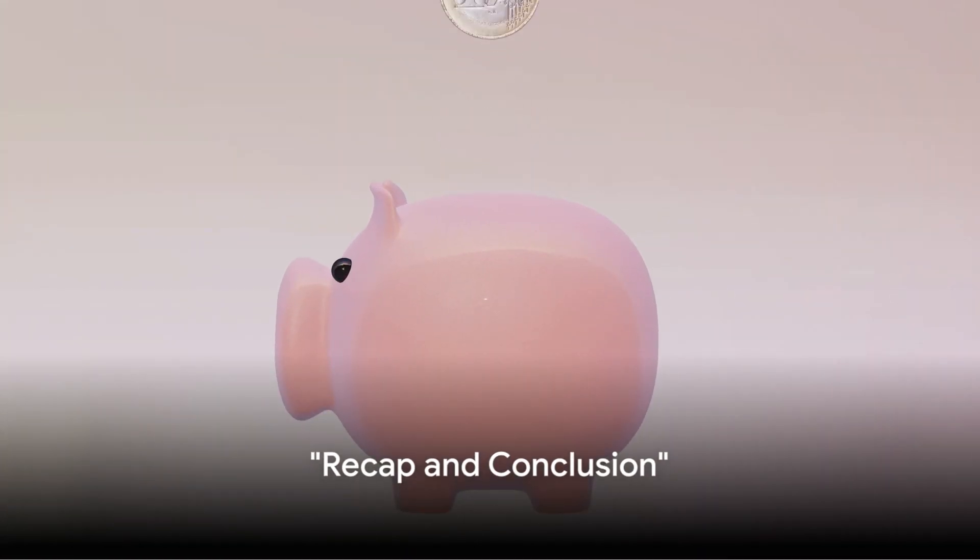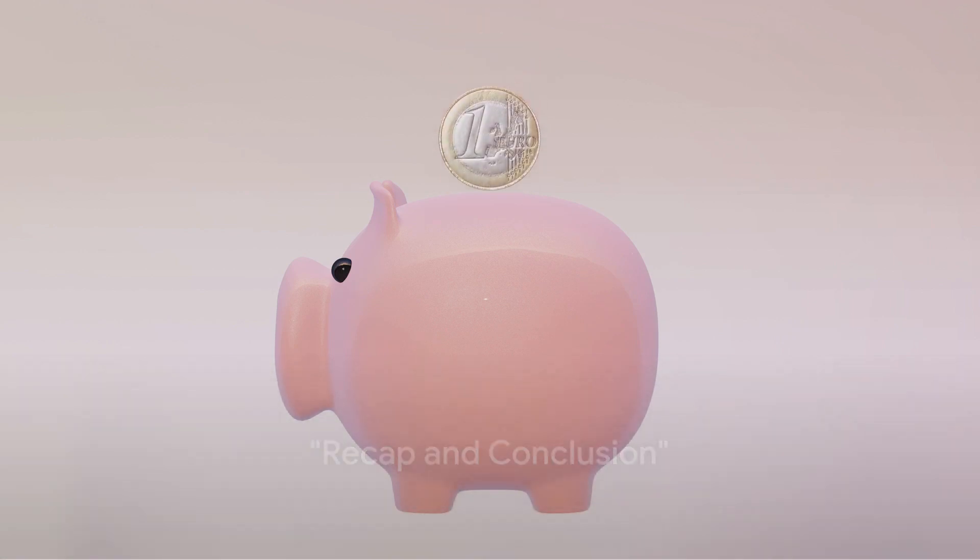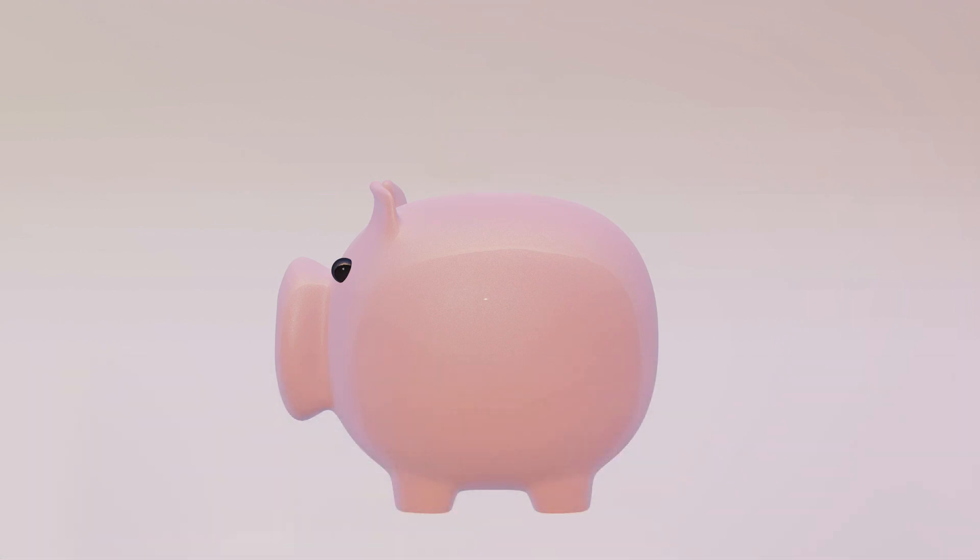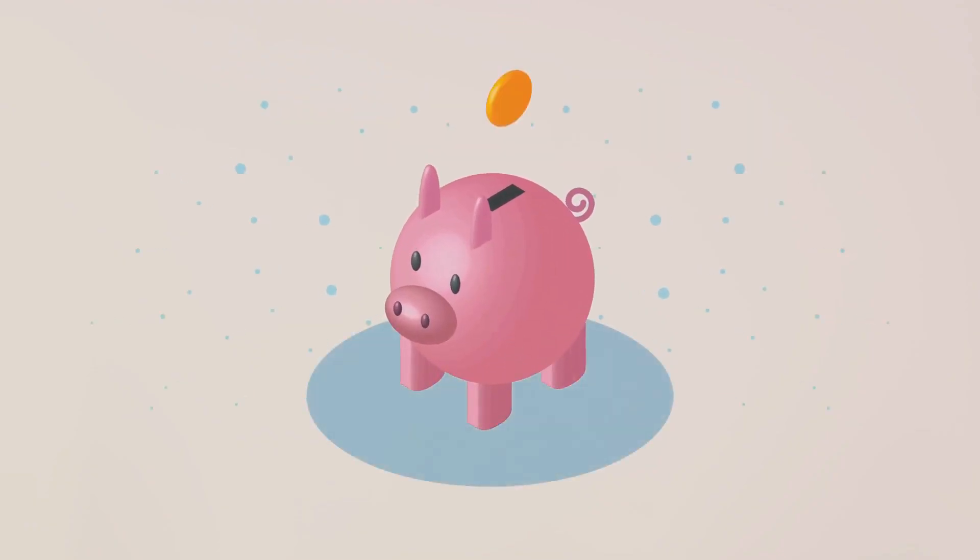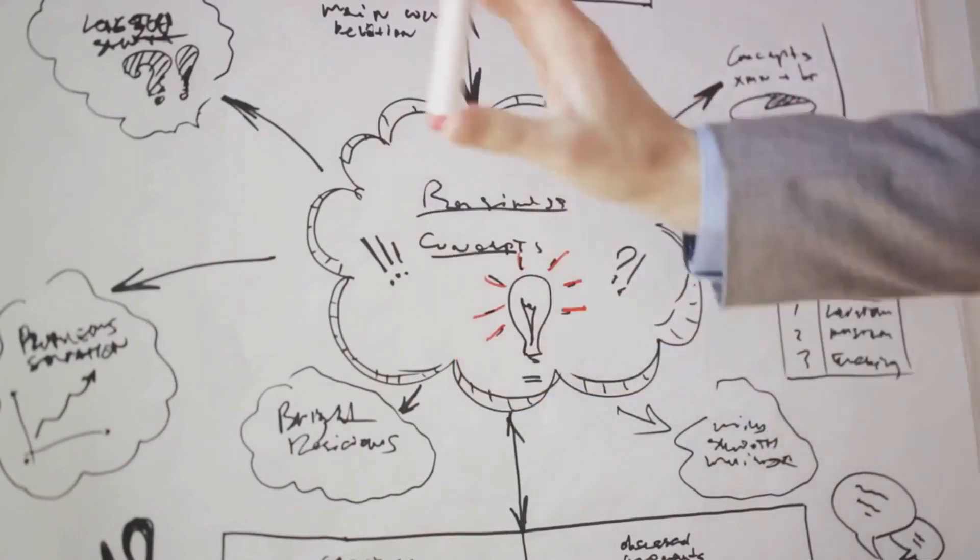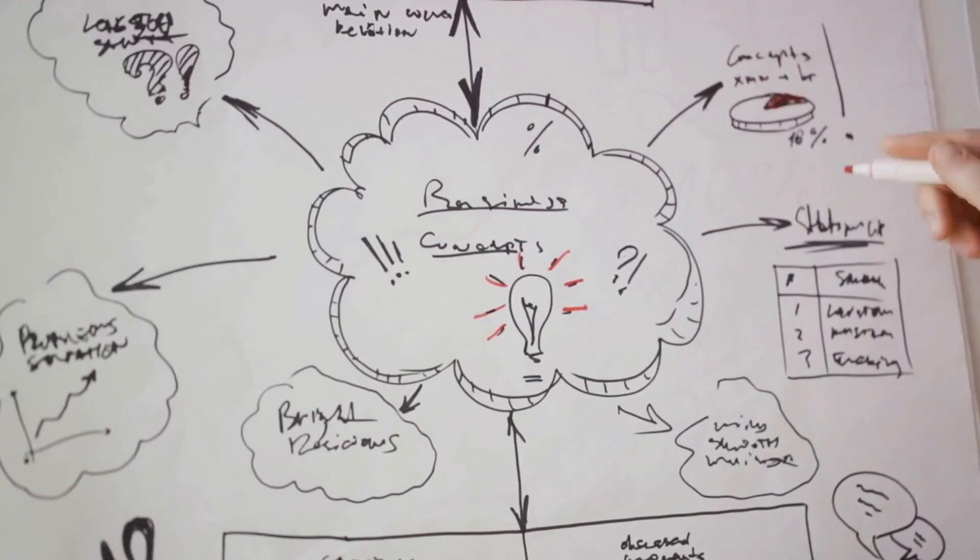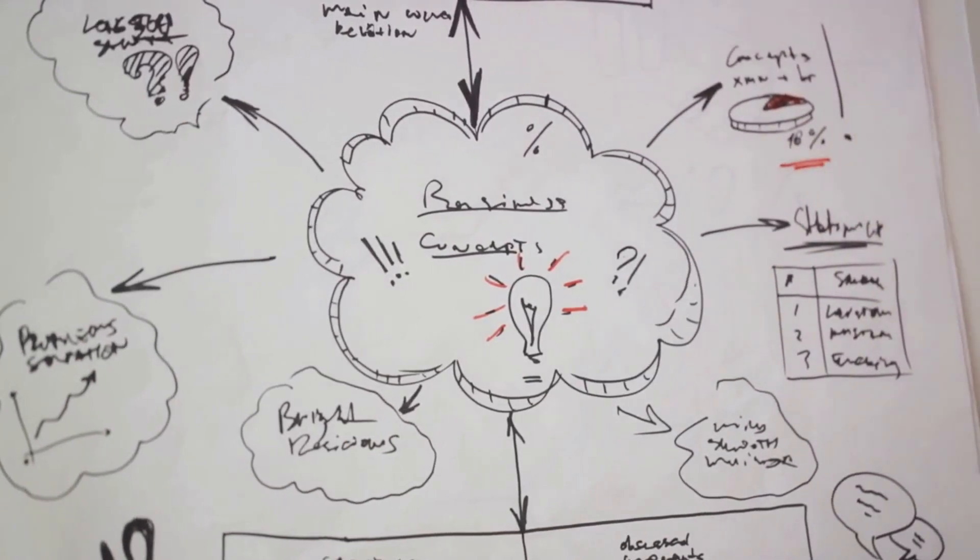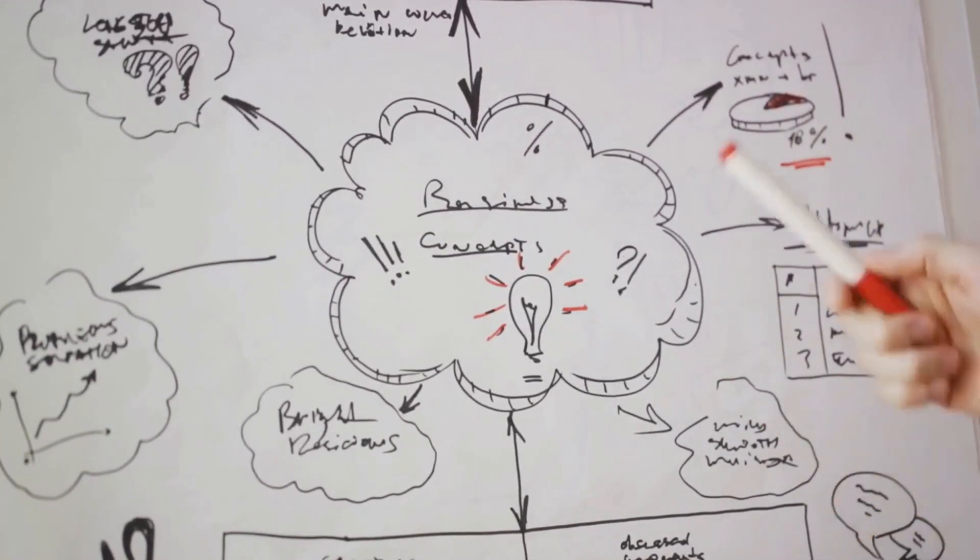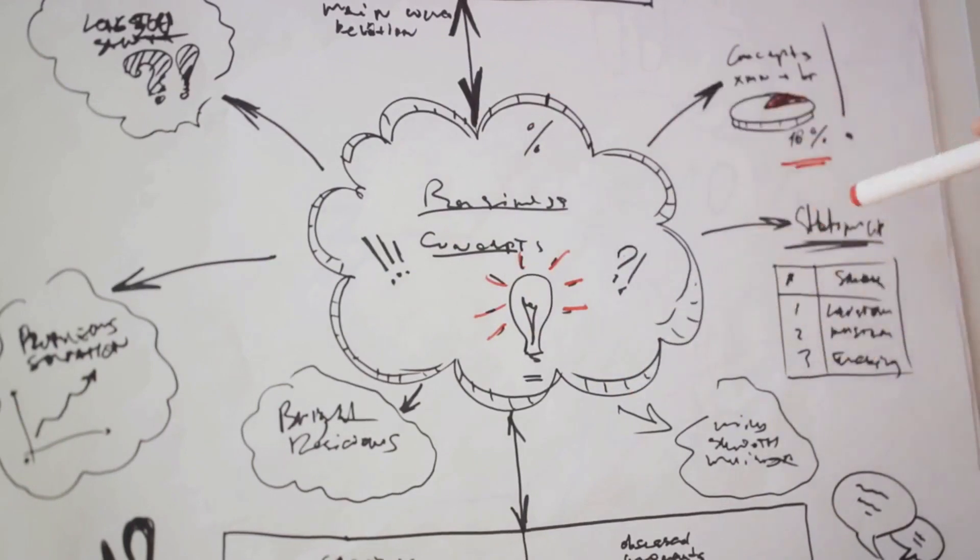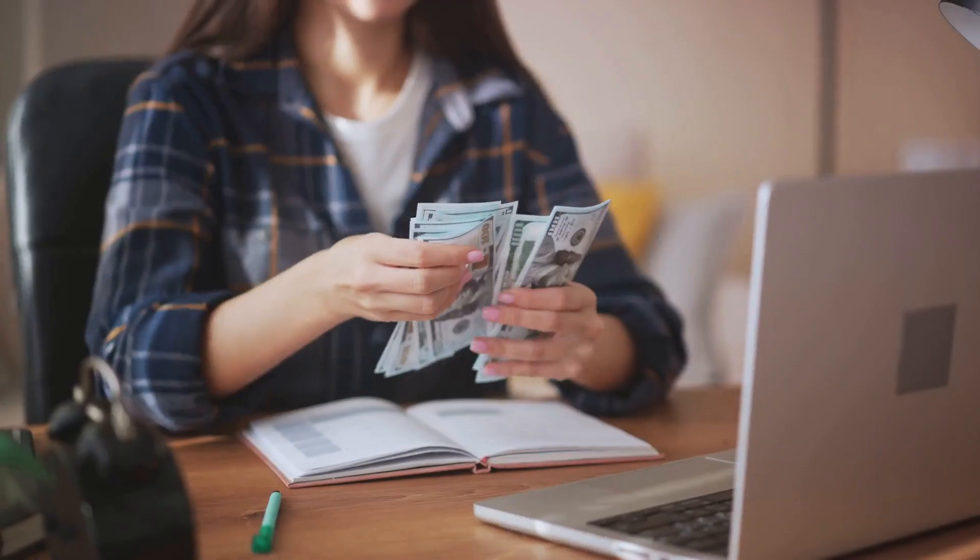To recap the key points we've discussed today, the journey to financial success begins with setting clear and realistic financial goals. It's not just about numbers, but about understanding what you want your financial future to look like. We then moved on to the first step in creating a financial vision board, which is defining your financial goals. Whether it's buying a house, starting a business, or planning for retirement, it's essential to know what you're working towards.